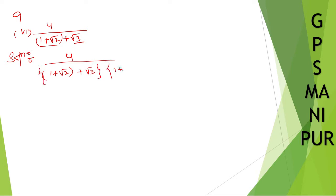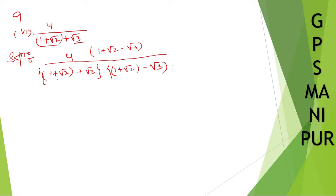Multiply by the conjugate: 1 plus root 2 minus root 3 in the denominator, and the same in the numerator — 1 plus root 2 minus root 3. This gives us the form (a plus b)(a minus b), which equals a squared minus b squared.